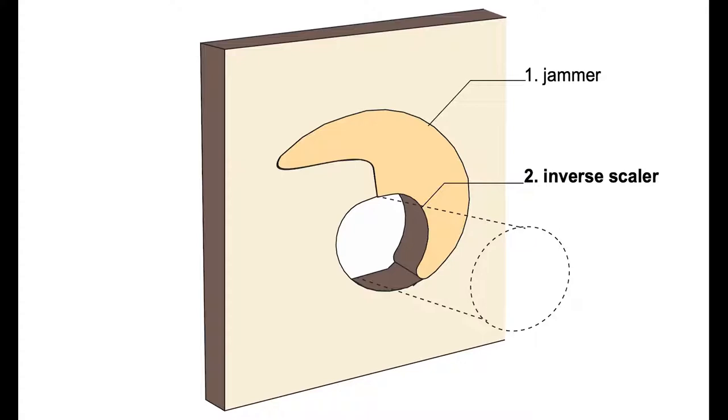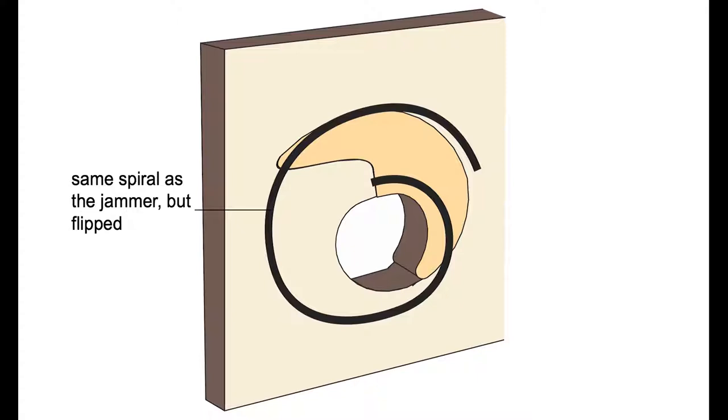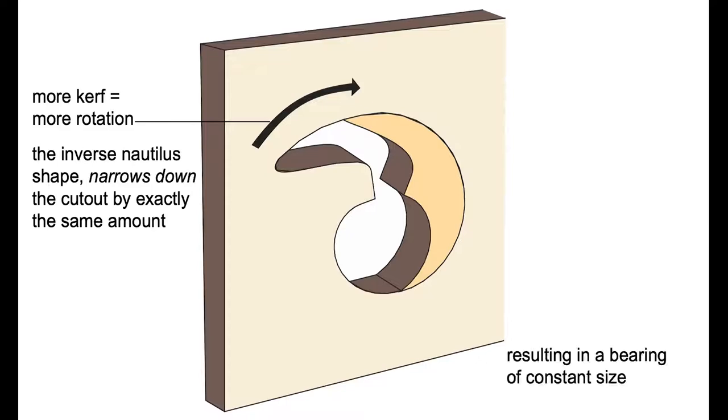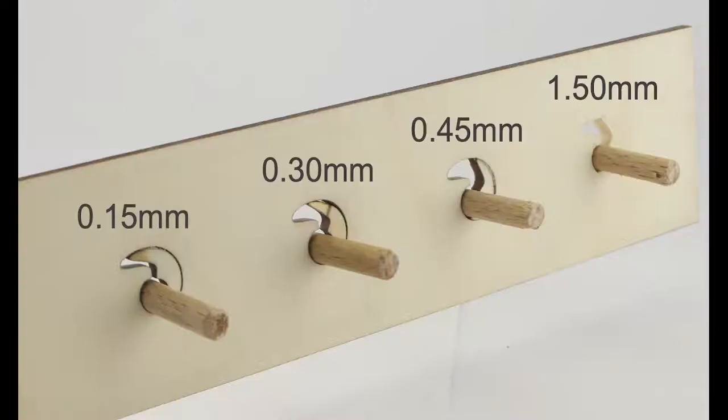The inverse scalar, in turn, holds the axle in place. The shape of the inverse scalar is the same as that of the jammer, but flipped. So, as more kerf results in more rotation of the jammer, the inverse scalar now narrows down the cutout by exactly the same amount. Which results in a bearing of consistent size, even with increasing amounts of kerf.